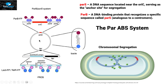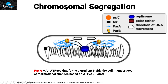The last component is parA. The origin of replication is represented as an orange circle, with replisomes present, and parB protein attached to the parS site near the origin of replication. The blue arrows represent the parA proteins. ParA is an ATPase that forms a gradient inside the cell, helping the chromosomes move apart toward their respective poles to complete chromosomal segregation.